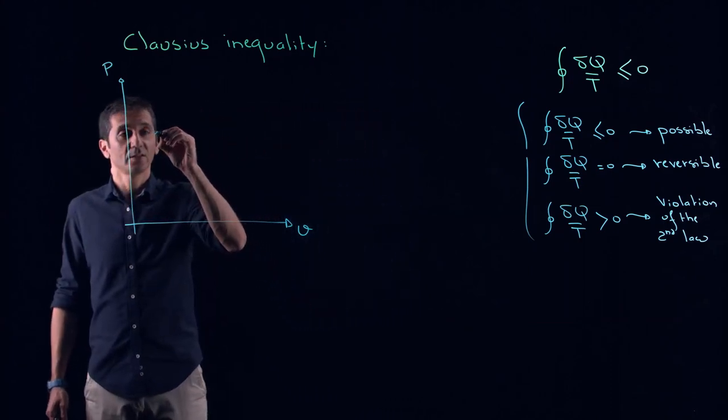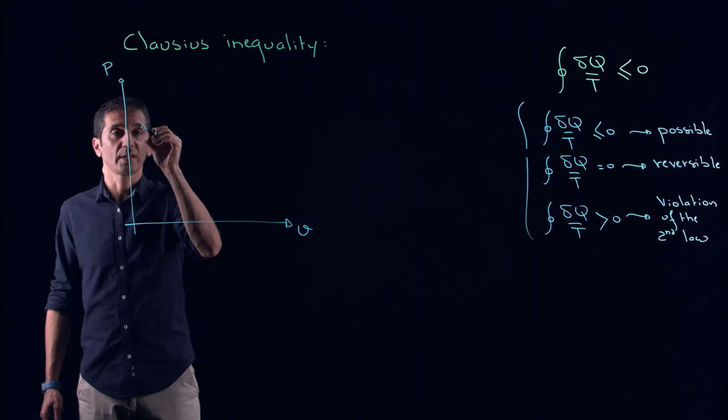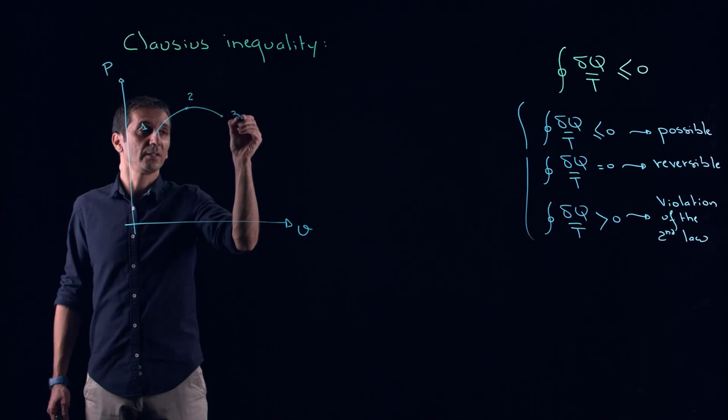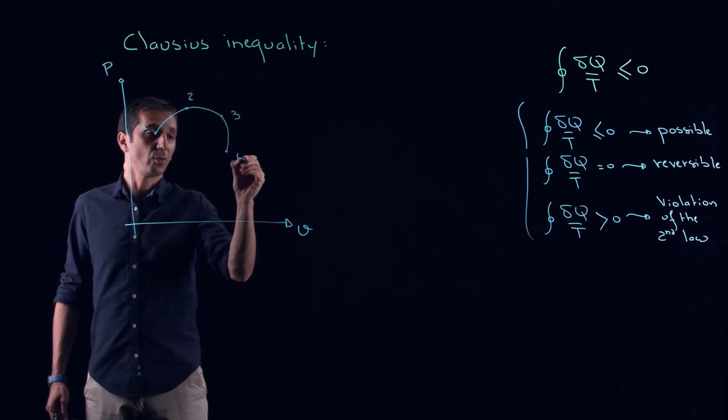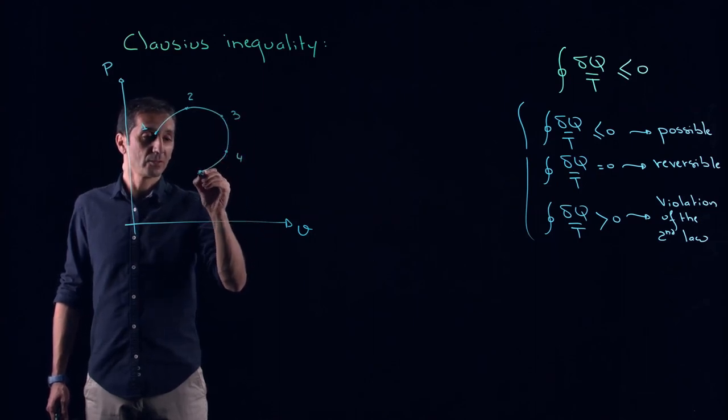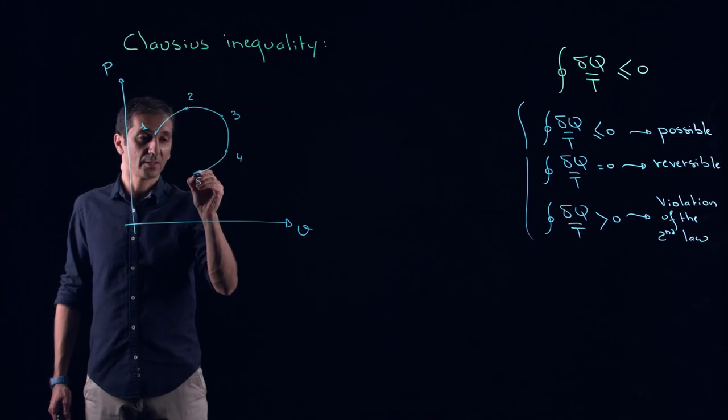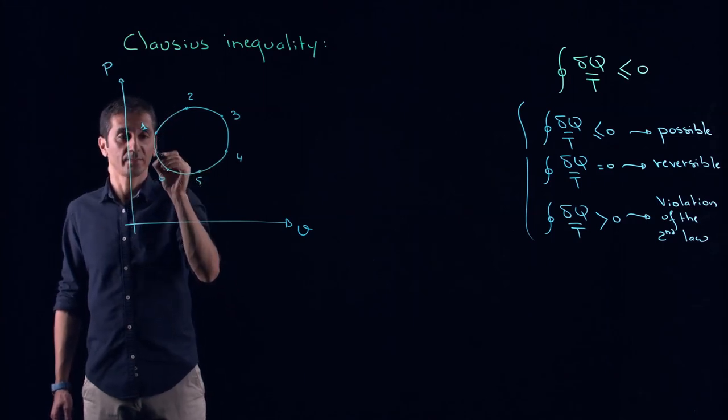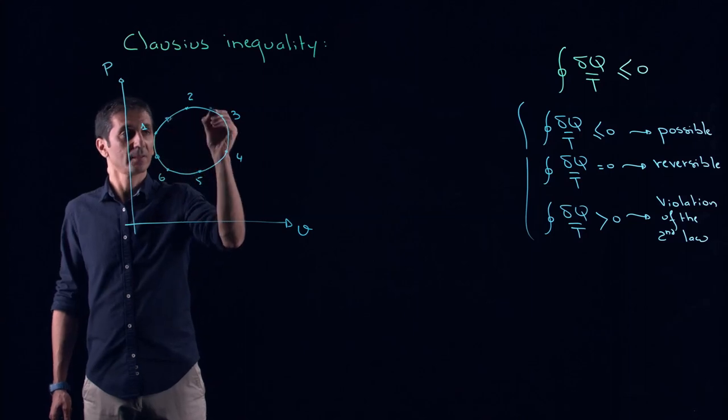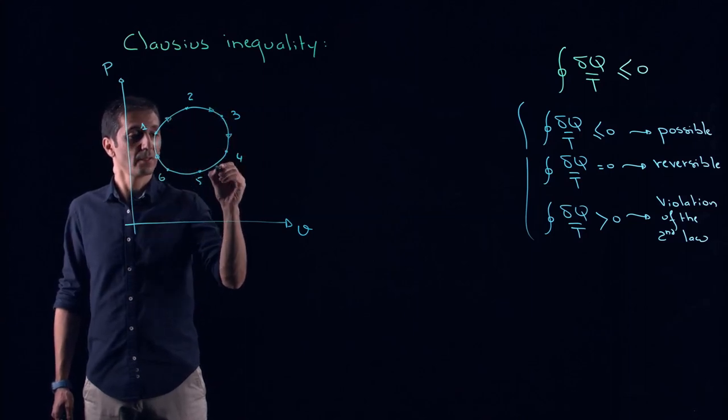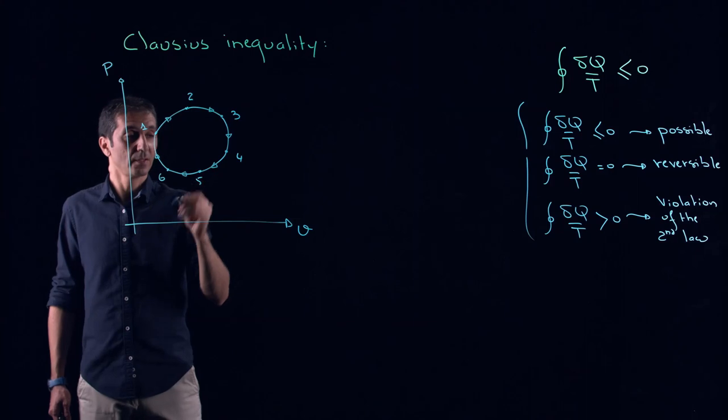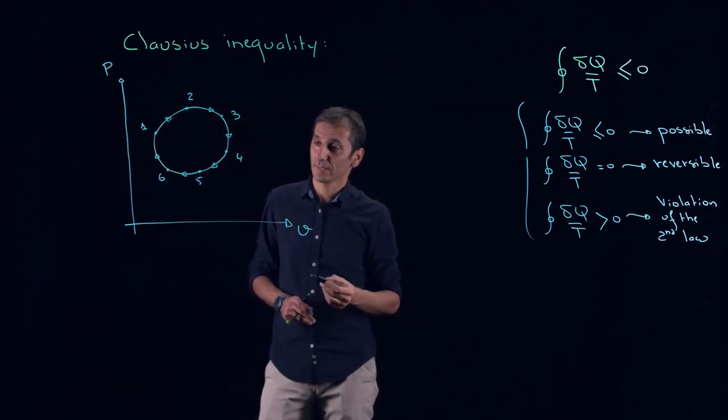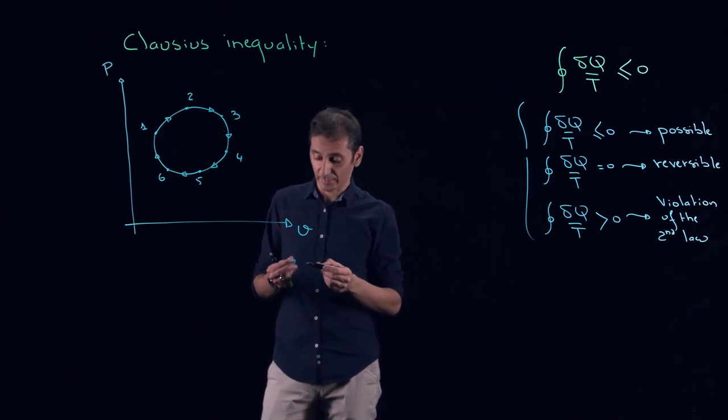So last time, the cat sketched the following cycle from 1 to 2 to 3 to 4 to 5 to 6, and then going back to 1. And my cat told me that there are different things happening on this cycle.